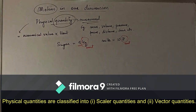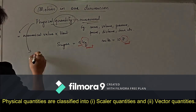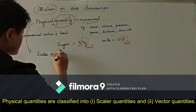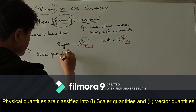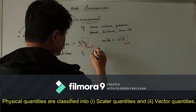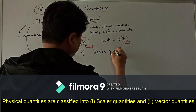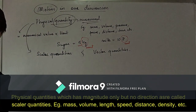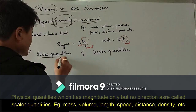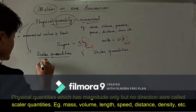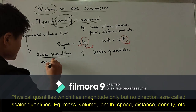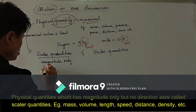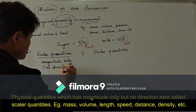Physical quantities are classified into two classes: scalar quantities and vector quantities. A scalar quantity is a physical quantity which has magnitude only — no direction.